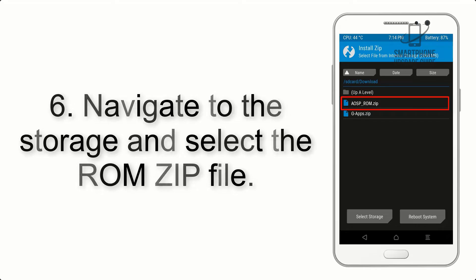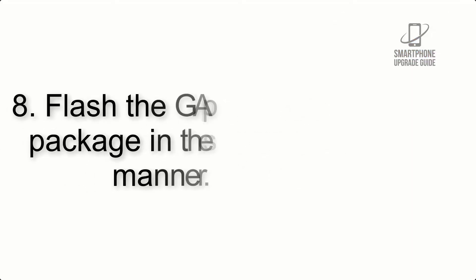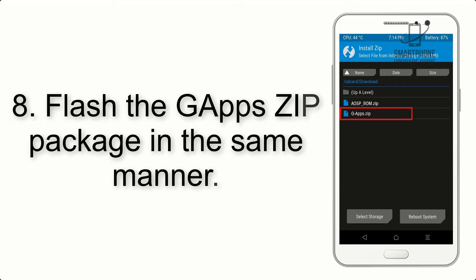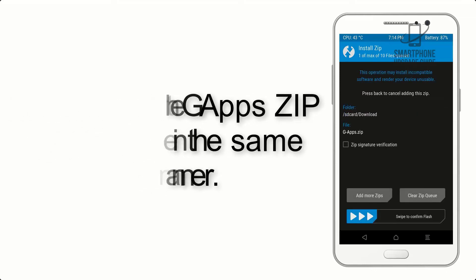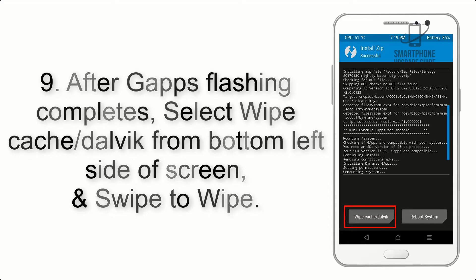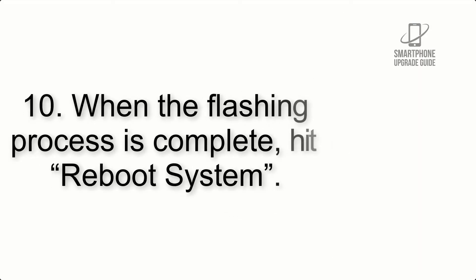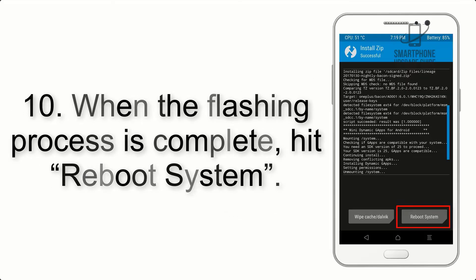Step 5: Go back to the recovery main screen and tap on the Install button. Step 6: Navigate to the storage and select the ROM zip file. Step 7: Swipe the button on the screen to install the ROM file. Step 8: Flash the GApps zip package in the same manner. Step 9: After GApps flashing completes, select Wipe Cache and Dalvik from the bottom left side of the screen and swipe to wipe.